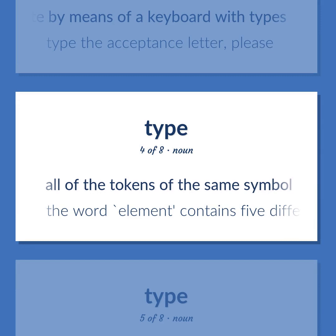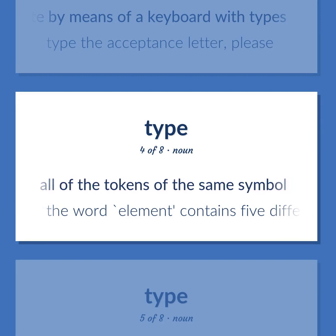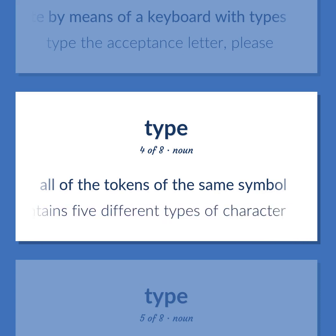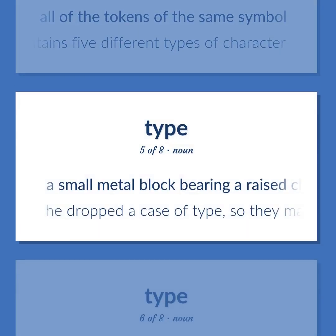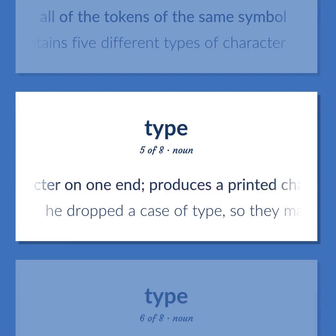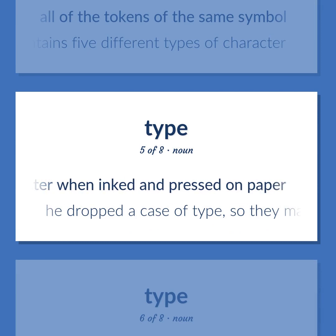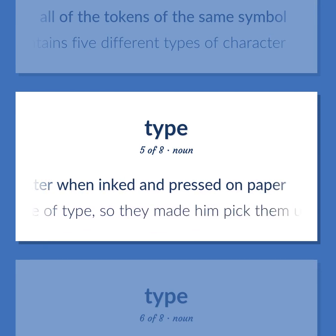All of the tokens of the same symbol — the word 'element' contains five different types of character. A small metal block bearing a raised character on one end; produces a printed character when inked and pressed on paper — he dropped a case of type, so they made him pick them up.